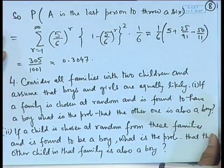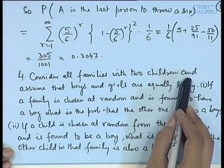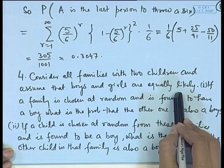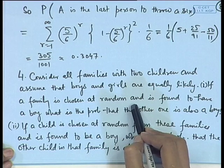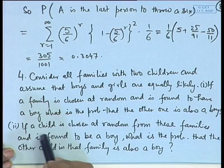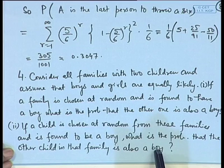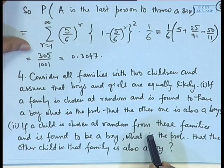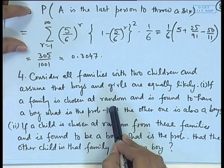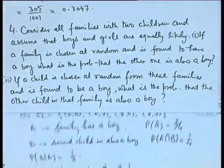Let us look at some applications of conditional probability. Consider all families with 2 children and assume that boys and girls are equally likely. If a family is chosen at random and is found to have a boy, what is the probability that the other one is also a boy? In the second part, if a child is chosen at random from these families and is found to be a boy, what is the probability that the other child in that family is also a boy? Notice here that the sampling scheme is different — in the first one the family is chosen, in the second one the child is chosen.